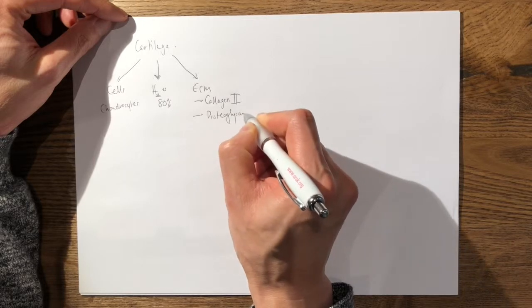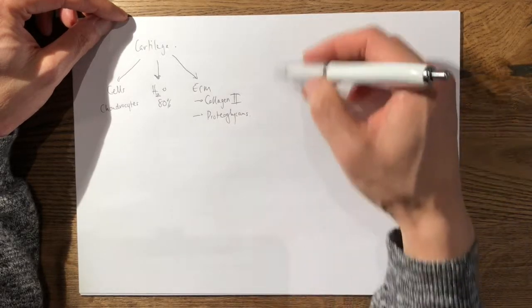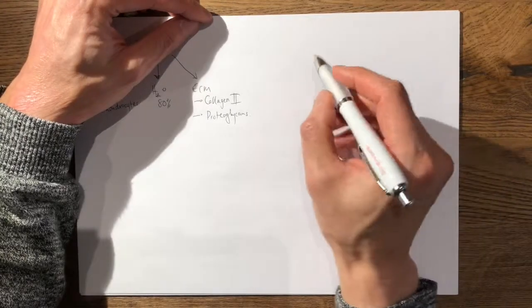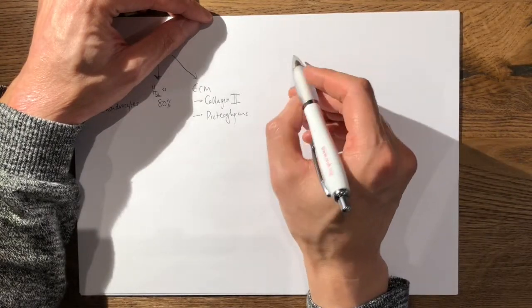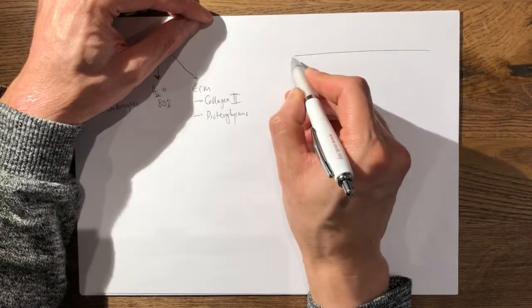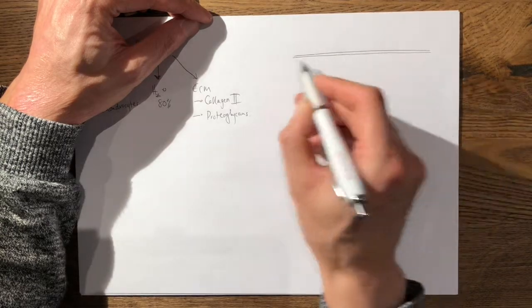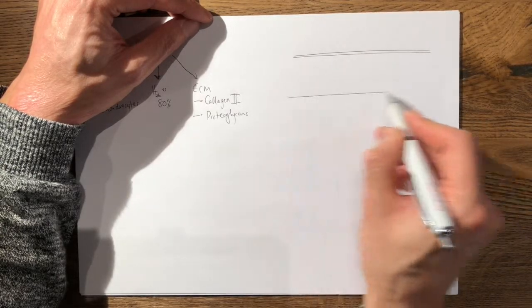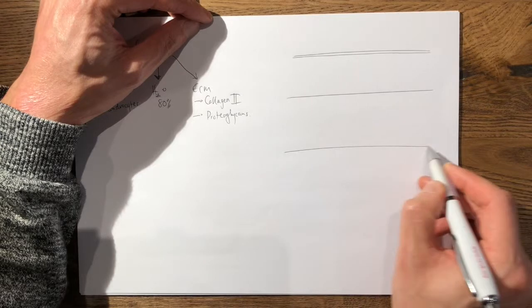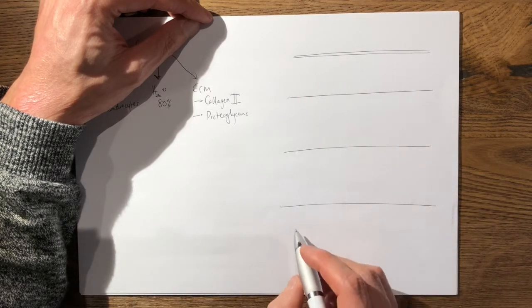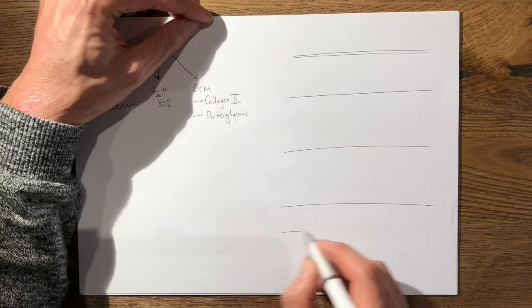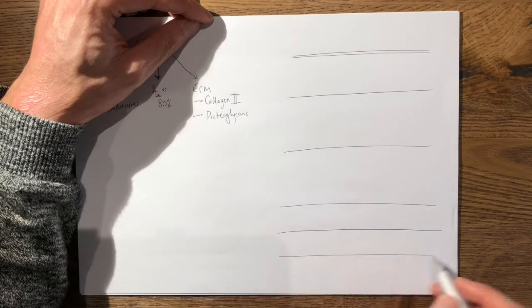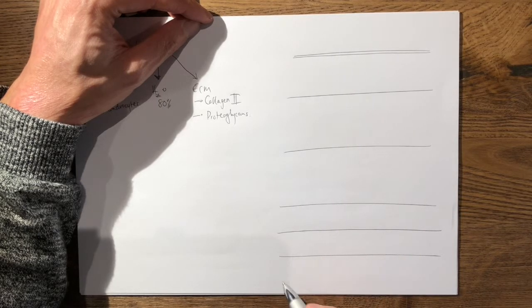So you may be asked to draw the cross section of articular cartilage, and it has various layers. It has a very thin surface layer, a superficial layer, a middle layer, deep layer, a calcified layer with subchondral bone, and then the cancellous bone.